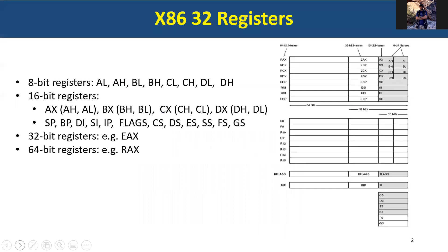To know assembly language, we must first know what kind of registers we have in our processors — basically x86. Using assembly language usually comes with using memory as well as registers. We introduced the concept of registers last video, and here we are taking it into more detail. There are 32 registers in an x86 processor.